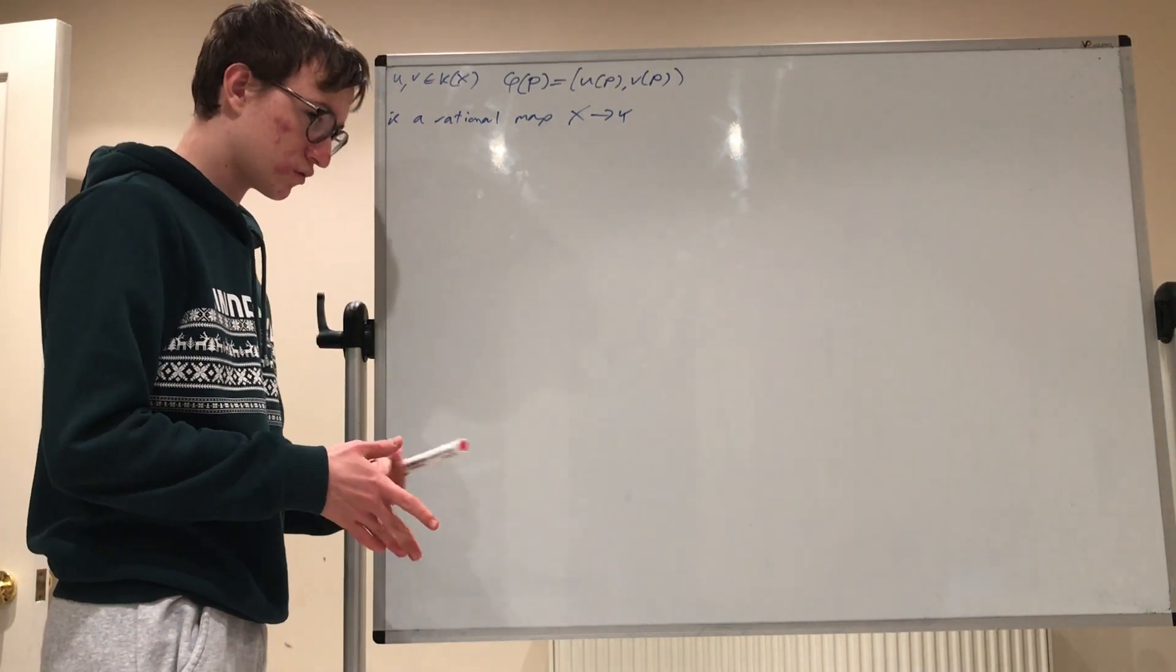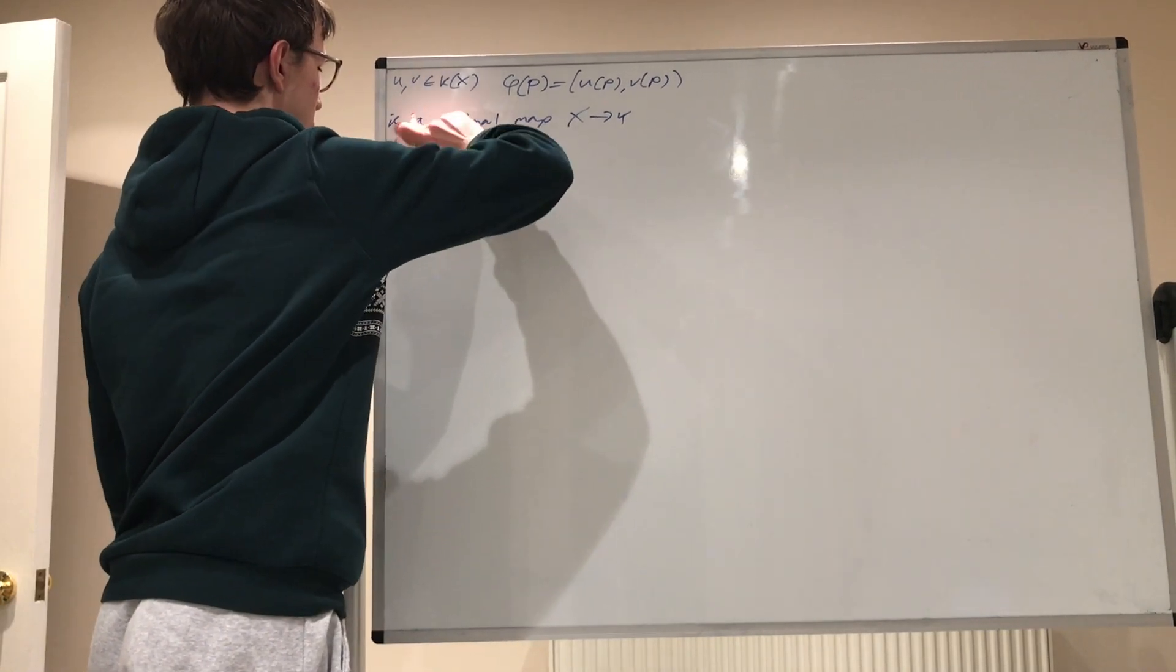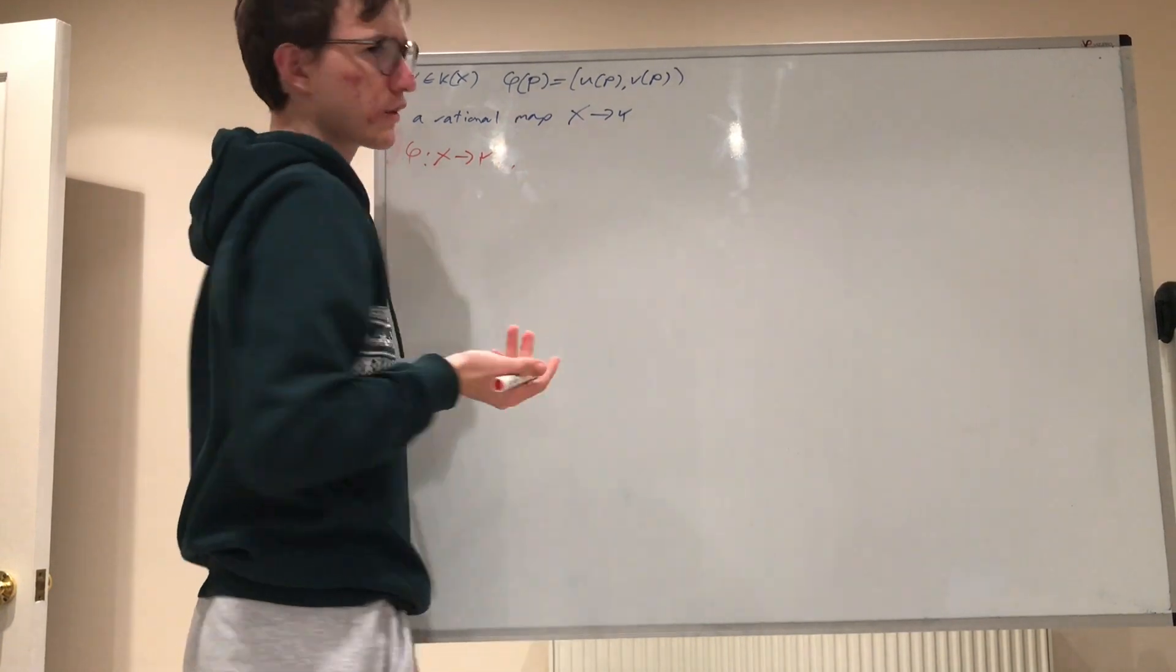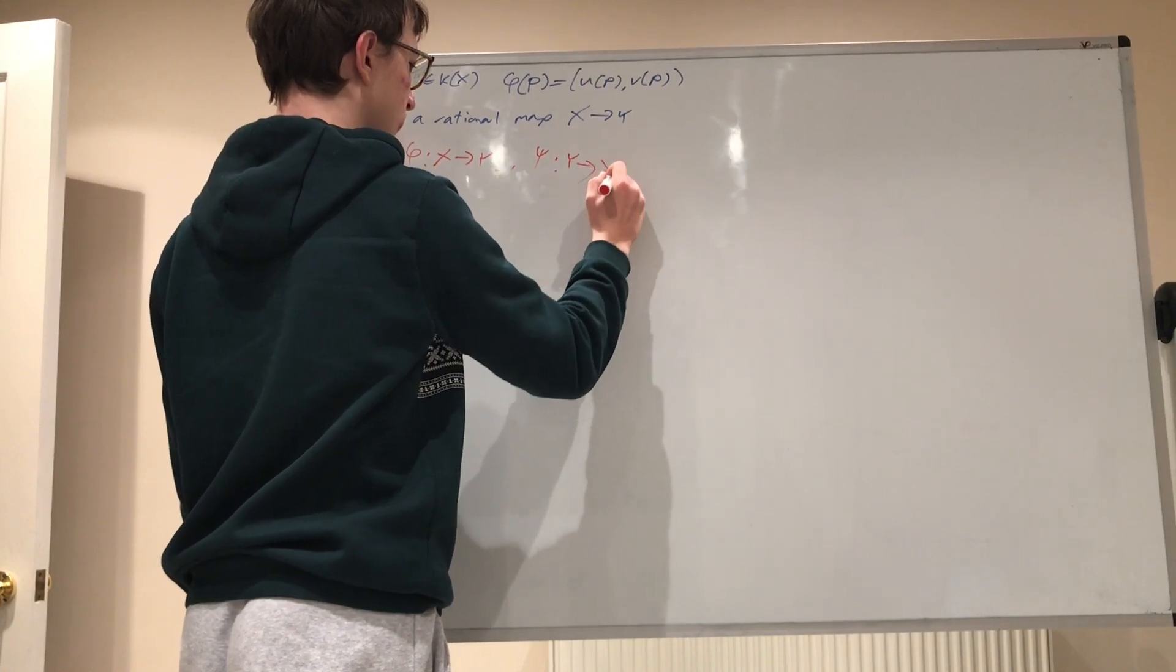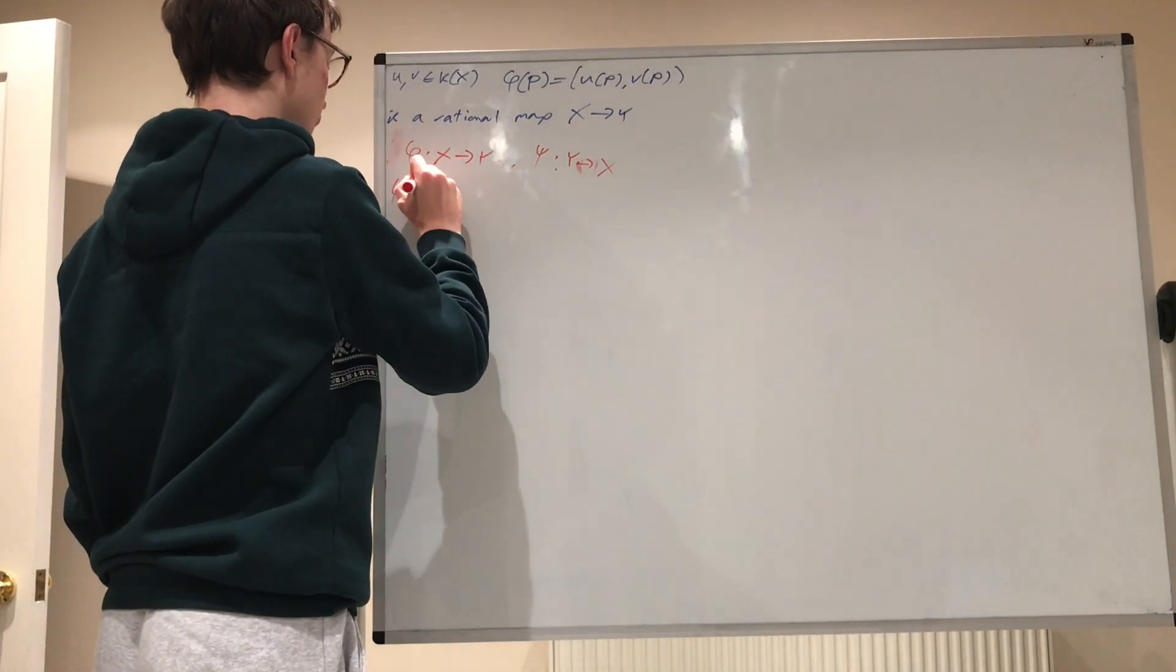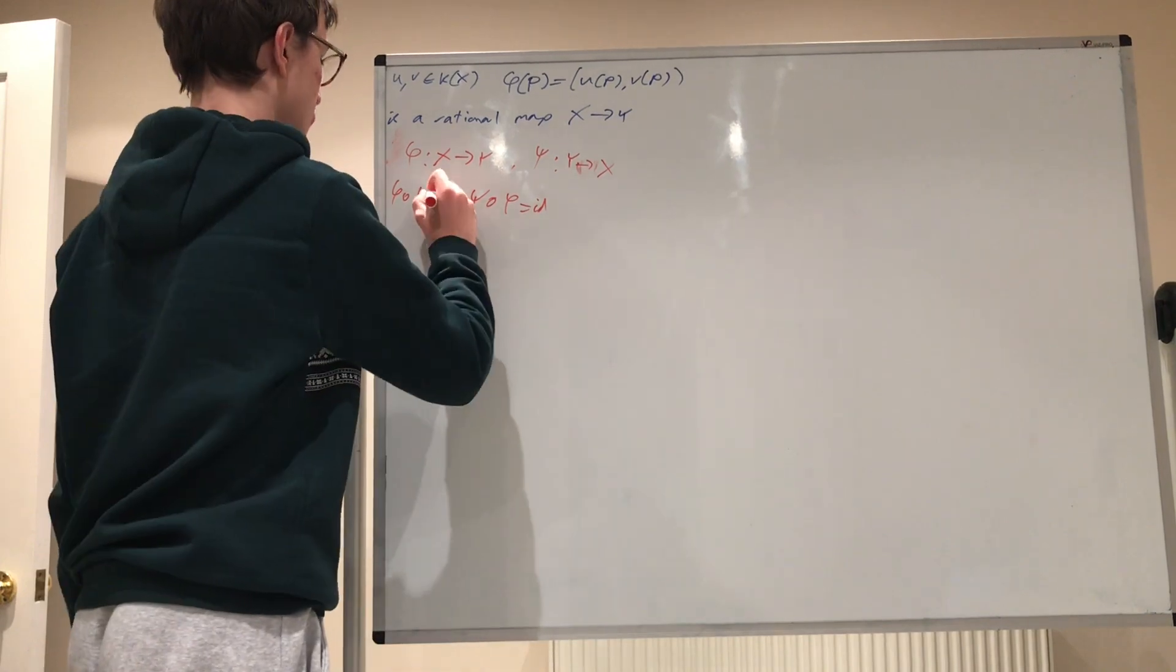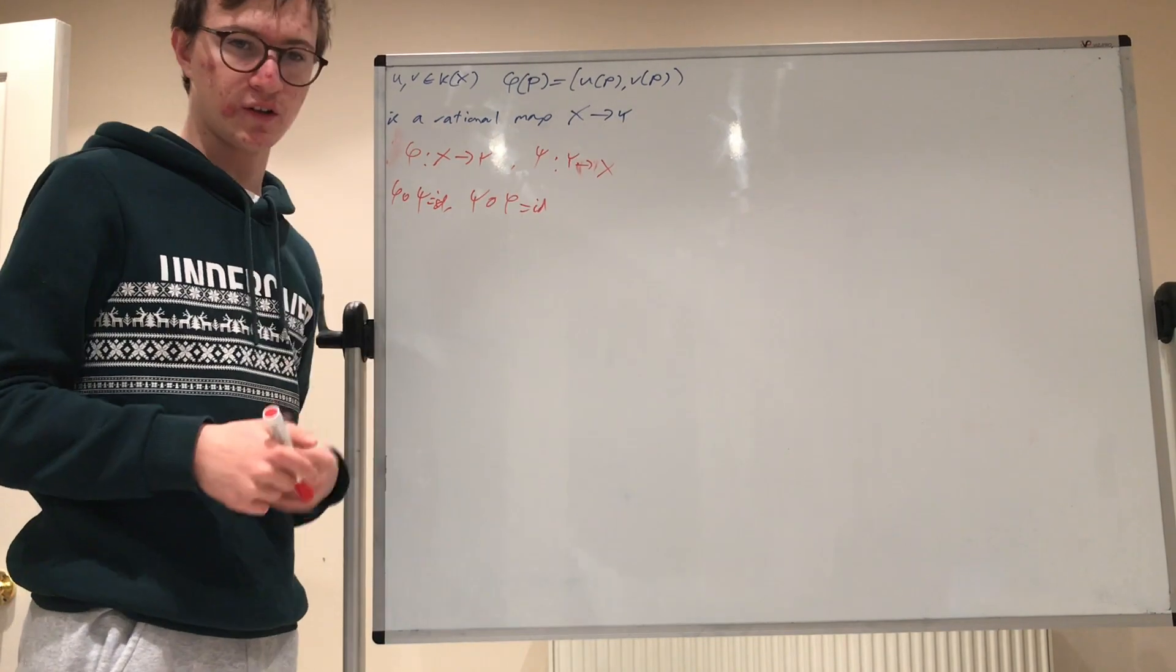Birational equivalence. If we have a rational map phi from x to y, if there's another rational map, this is again a very natural definition, psi from y to x, such that phi compose psi and psi compose phi are equal to the appropriate identities, identity on y and identity on x, then these are inverses, and y and x are said to be birationally equivalent.